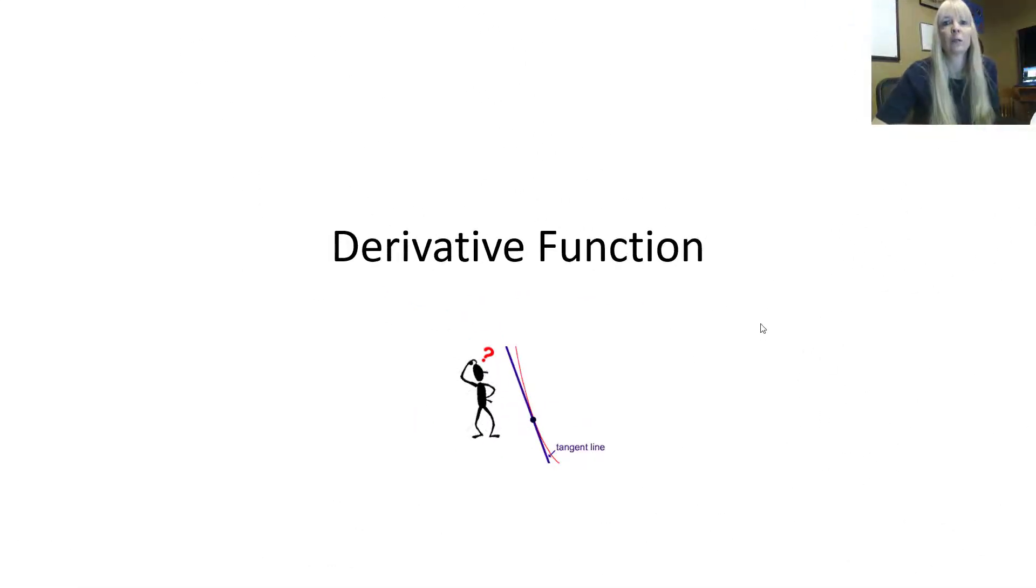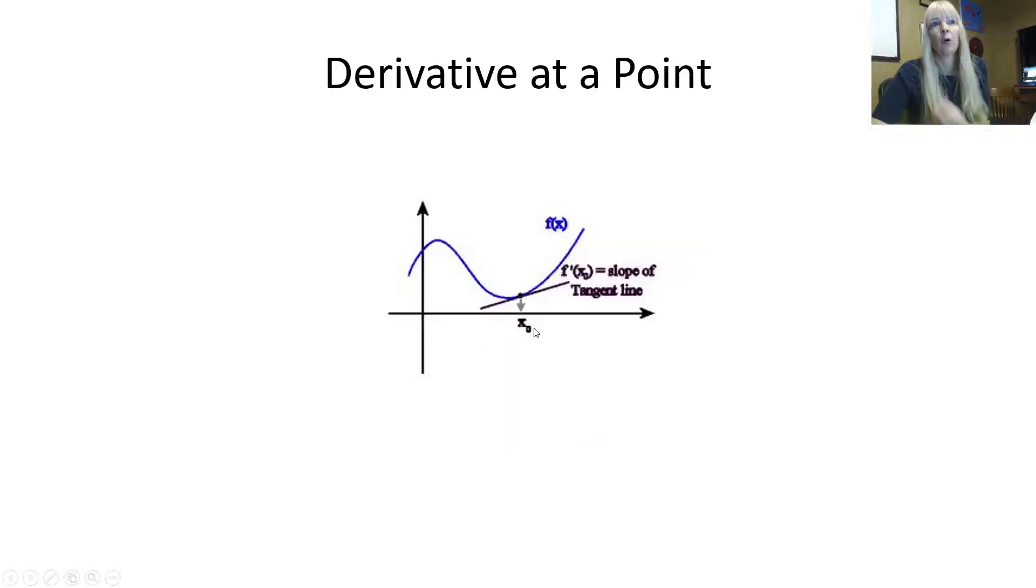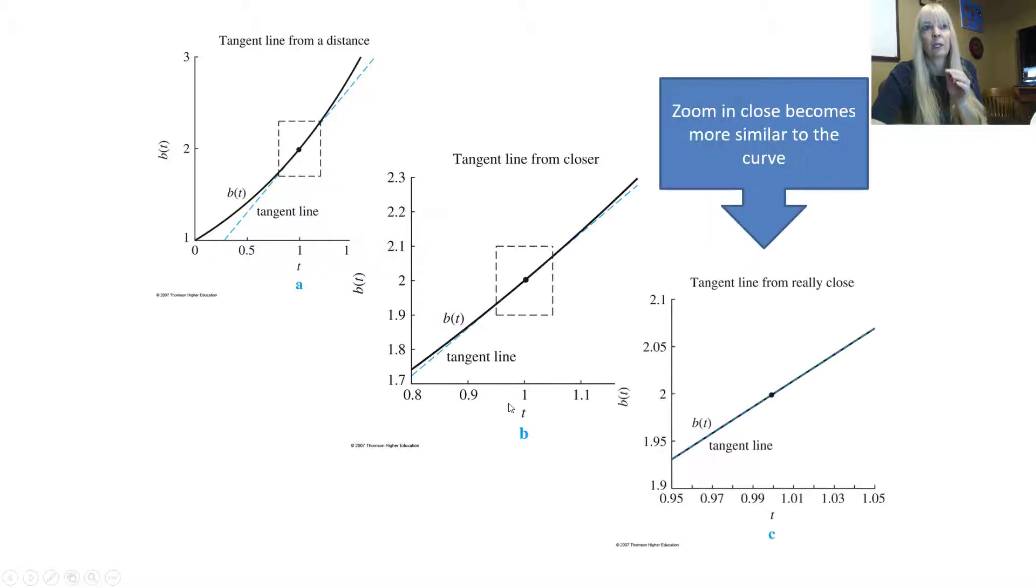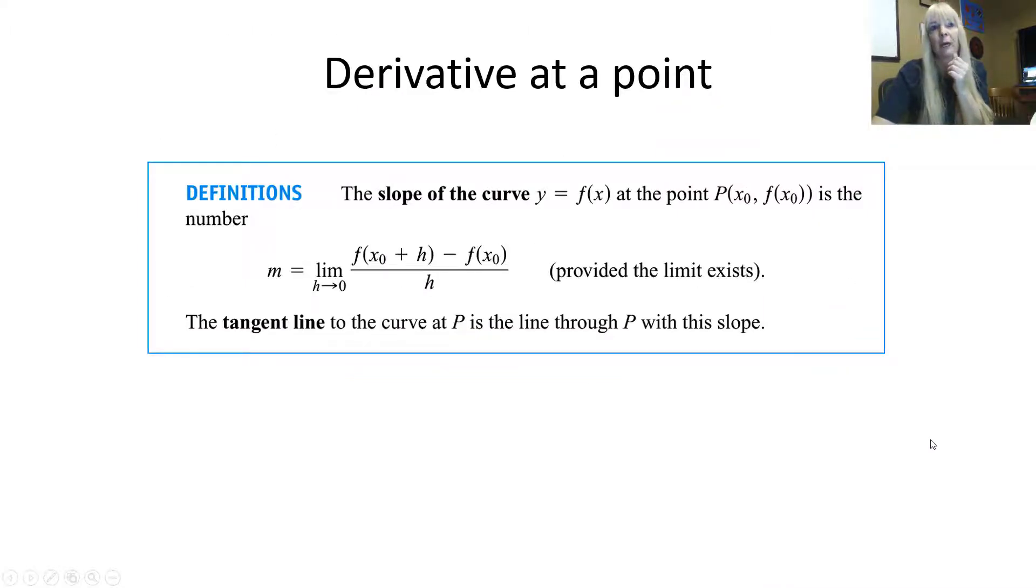The last thing we did was we talked about moving from an average rate of change to an instantaneous rate of change, which we called a derivative. So all the derivative is doing now is looking at an exact point on this curve and finding the slope. And how we did that is watch this t-axis here get smaller and smaller. So that's that gap, that's that h. So as we zoom in and that gap gets smaller and smaller, then what happens is this becomes linear, and that's the whole piece of letting your h go to 0.